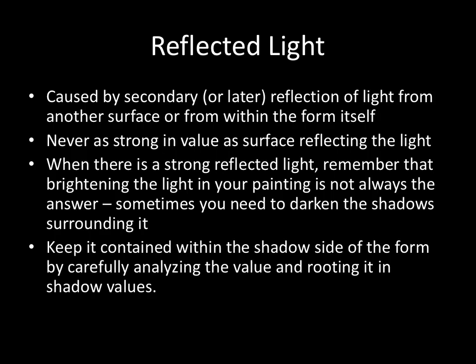Reflected light is caused by secondary or later reflection of light from another surface or from within the form itself, so it's never as strong in value as the surface reflecting the light. Think of it this way: the light hits the main surface at full power — let's say 100. As it reflects back in, it may be at 40%. Then it hits back into the cast shadow at maybe 10-20%, and back up into the object again at around 5%. You can see it quickly loses its power as it bounces back and forth, which is why we see this slow fade of the reflected light going away.